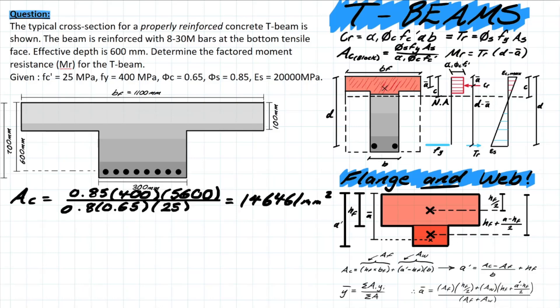But the area of the web is a little bit different. We have this a' value that is referencing the absolute end or the start of your compressive block assumption, and then you're taking away the height of the flange so you're only left with this dark red area, then you're multiplying that times the width of your web which is 300.